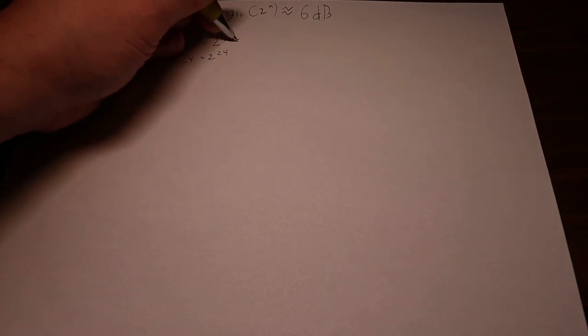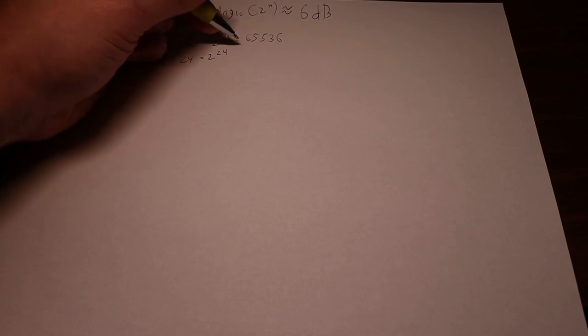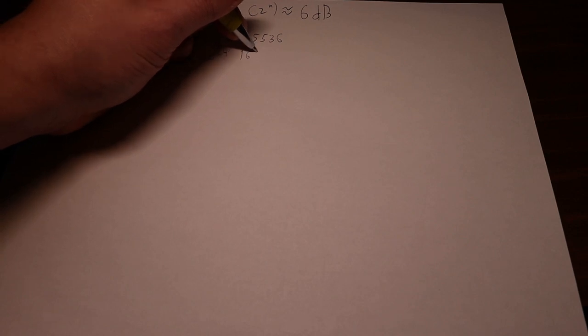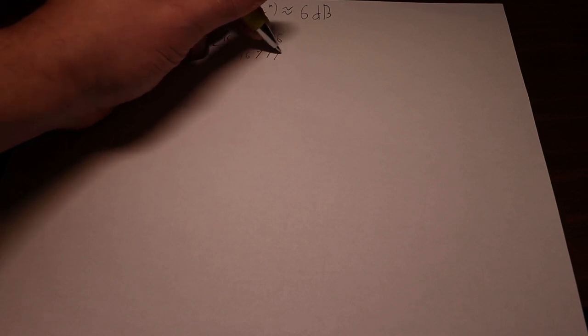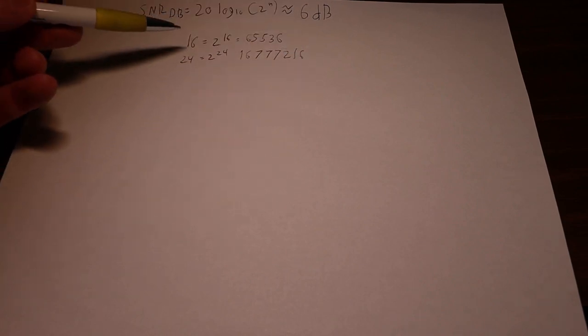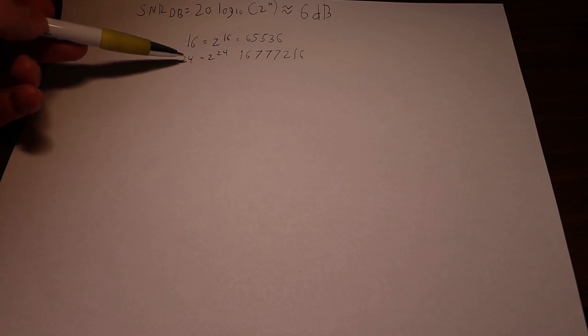So 2 to the 16th gives us 65,536 possible values while 2 to the 24th gives us 16,777,216 possible values. So there's a large difference between a 16-bit signal and a 24-bit signal.